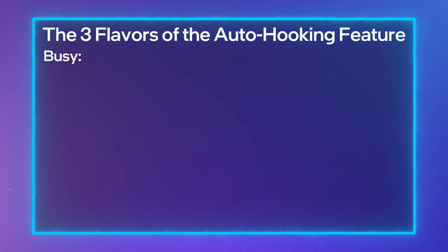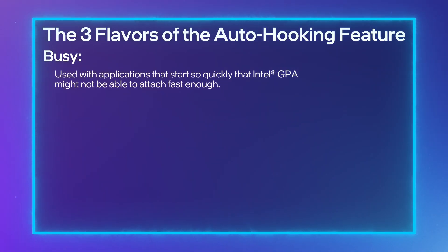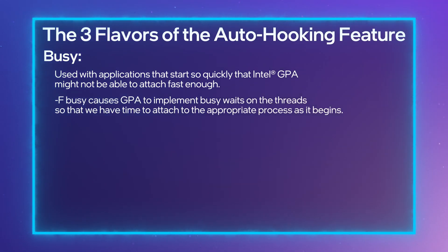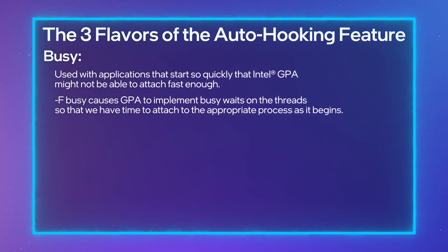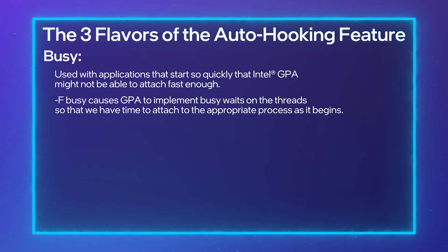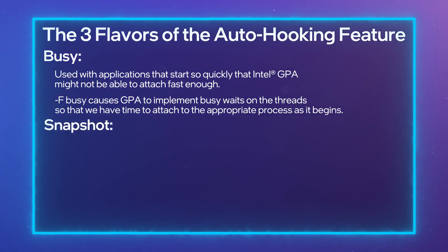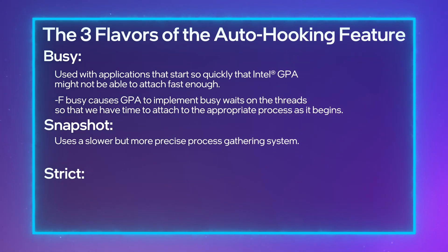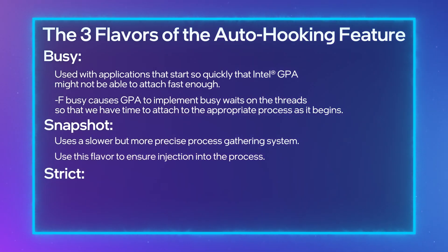Busy would be used with applications that start so quickly that Intel GPA might not be able to attach fast enough. So, -F Busy causes GPA to implement busy waits on the threads, so that we can have time to attach to the appropriate processes as it begins. Snapshot uses a slower, but more precise, process gathering system. Use this flavor to ensure injection into the process.